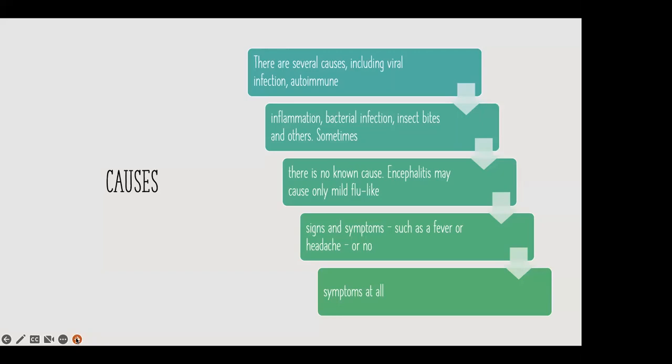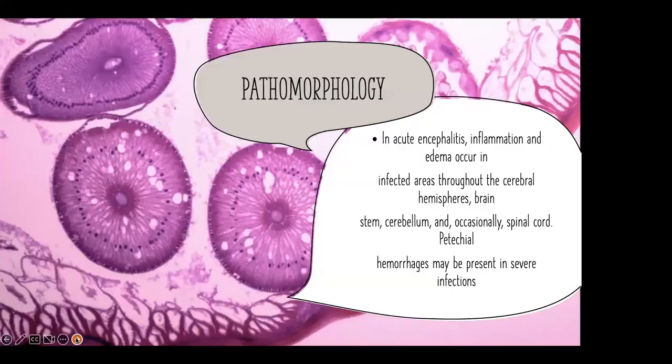Regarding pathomorphology, in acute encephalitis, inflammation and edema occur in infected areas throughout the cerebral hemispheres, brain stem, cerebellum, and occasionally the spinal cord and pia mater.